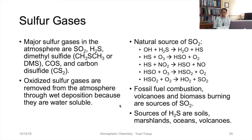Now, the sulfur gases. The major sulfur gases in the atmosphere are sulfur dioxide (SO₂), hydrogen sulfide (H₂S), dimethyl sulfide (DMS, or CH₃SCH₃), carbonyl sulfide (COS), and carbon disulfide (CS₂). Oxidized sulfur gases are removed from the atmosphere through wet deposition because they are water-soluble, making this a major sink.